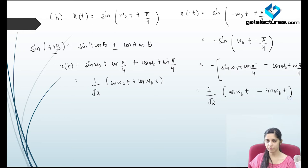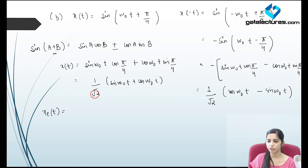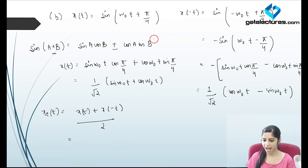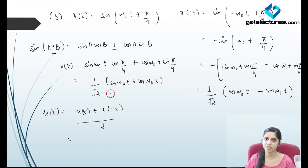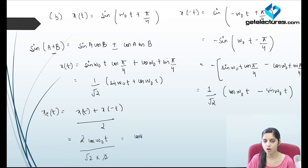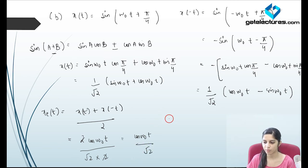So x(minus t) is (1/root 2)[cos(omega_0 t) minus sin(omega_0 t)]. If I find the even part — adding x(t) and x(minus t) — the sine terms cancel, leaving 2cos(omega_0 t) times (1/root 2), then dividing by 2 gives the even part as cos(omega_0 t) / root 2. For the odd part, subtracting x(minus t) from x(t): the cosine part cancels and the sine part adds, giving 2sin(omega_0 t) / root 2, divided by 2 gives sin(omega_0 t) / root 2. This is how we calculate even and odd parts of signals.